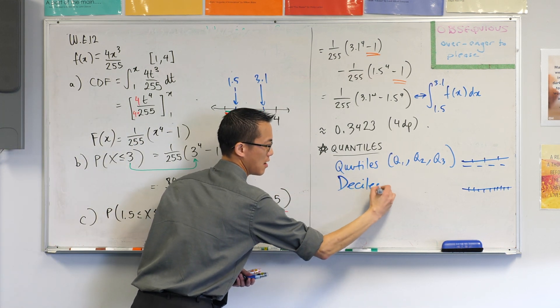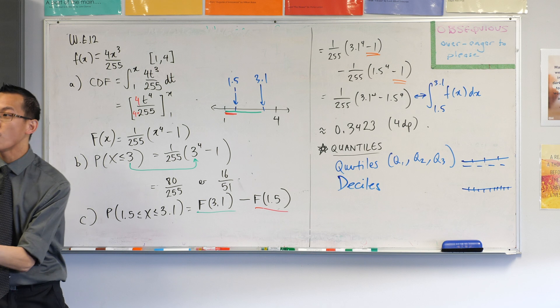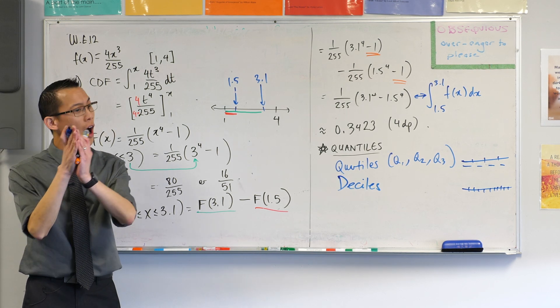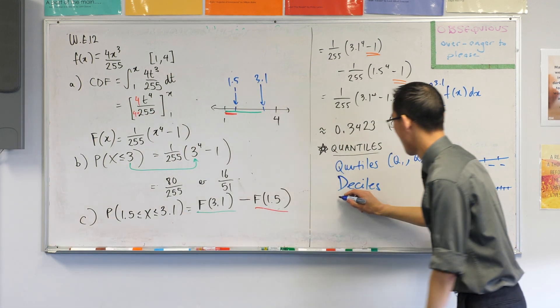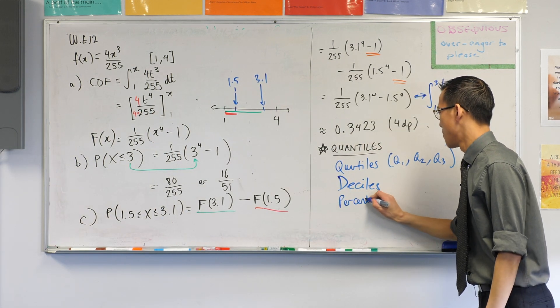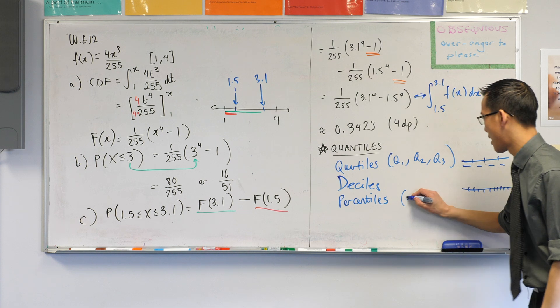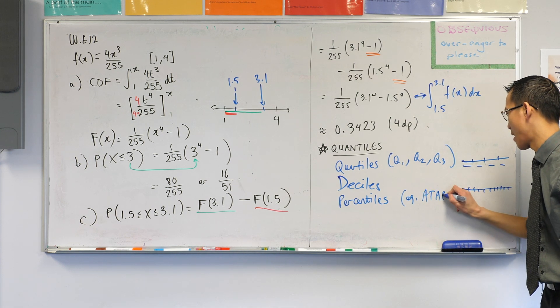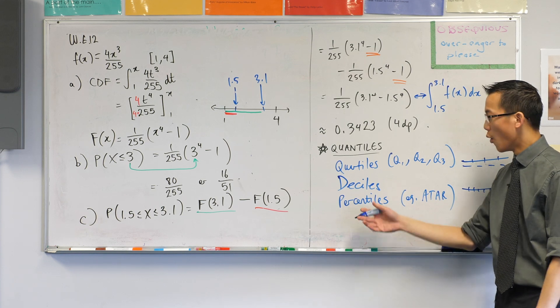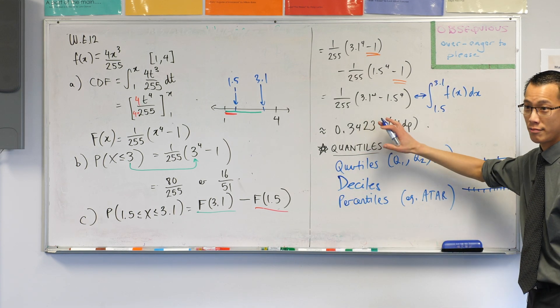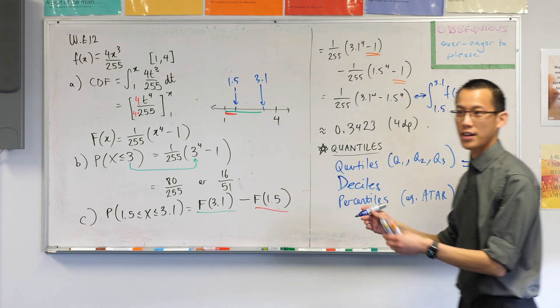So deciles, what if you wanted even more detail? You're like, I want to divide into 100 equal sections. You would call them percentiles. And of course, we're quite familiar with these guys because of everyone's favourite percentile, the ATAR, right? So, we were talking about this before. So the whole idea is we can divide up our distribution into whatever kinds of chunks we want.